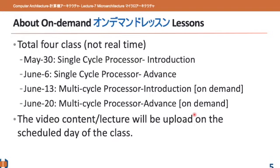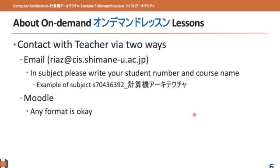Here is the content schedule for this on-demand course segment. The scheduled classes are May 30, June 6, June 13, and June 20. The classes cover microarchitecture, particularly the single-cycle processor and the multi-cycle processor. The content will be uploaded to Moodle on the day the class is scheduled — for example, on June 6 I will upload the content for the single-cycle processor.